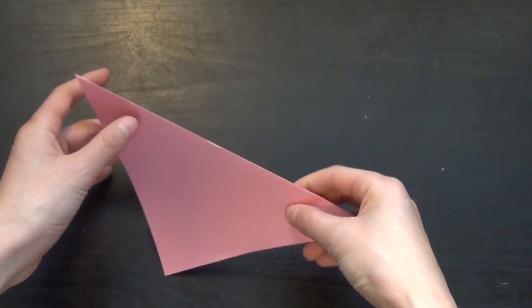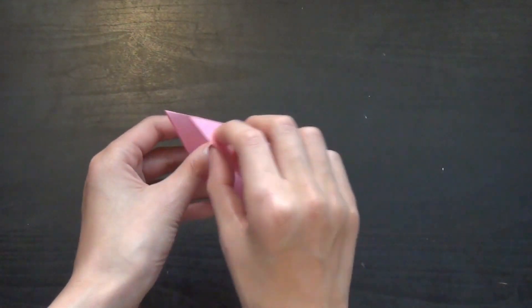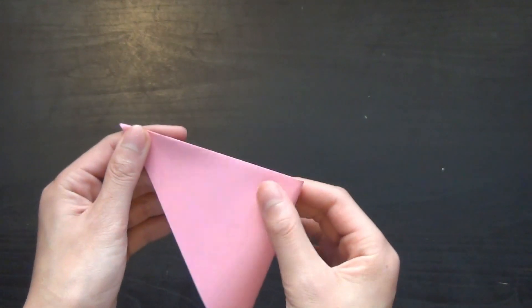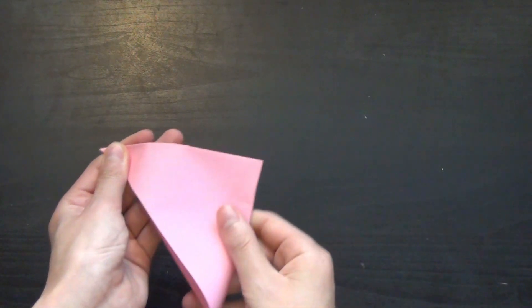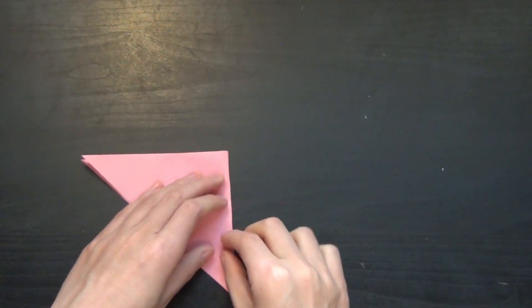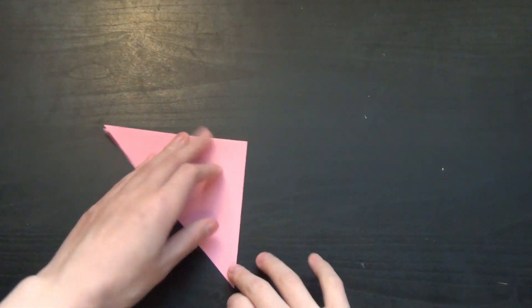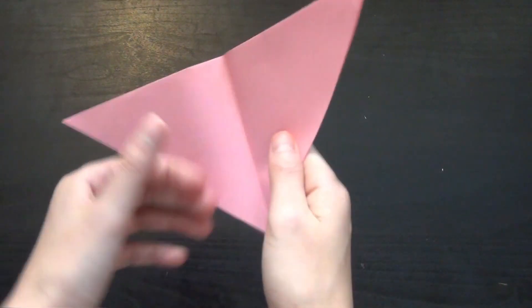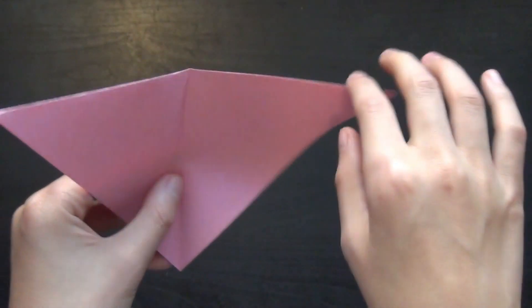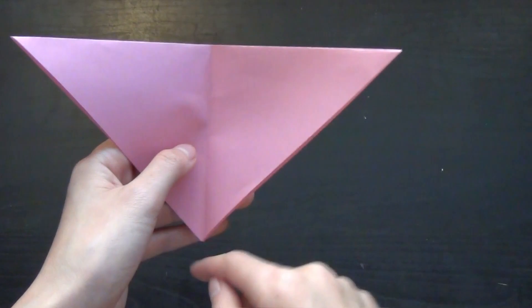The next step is to fold these two corners together. Now you want to open this back up and fold these two sides to the center crease.